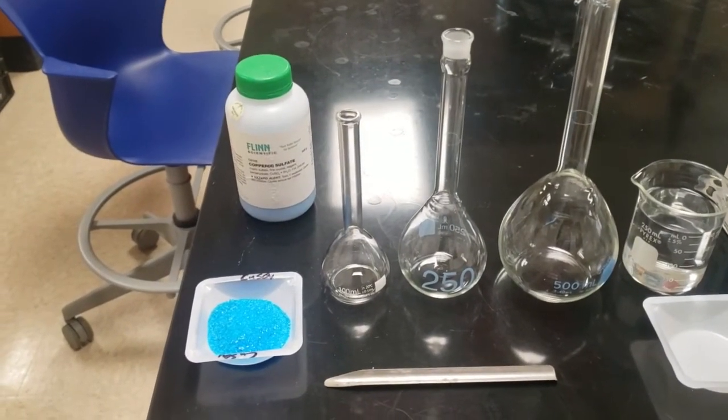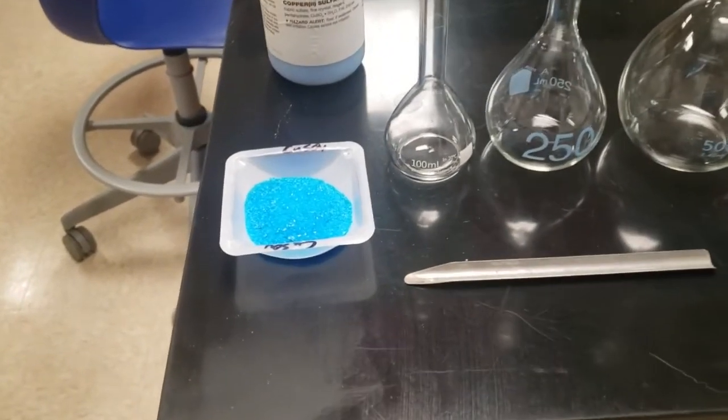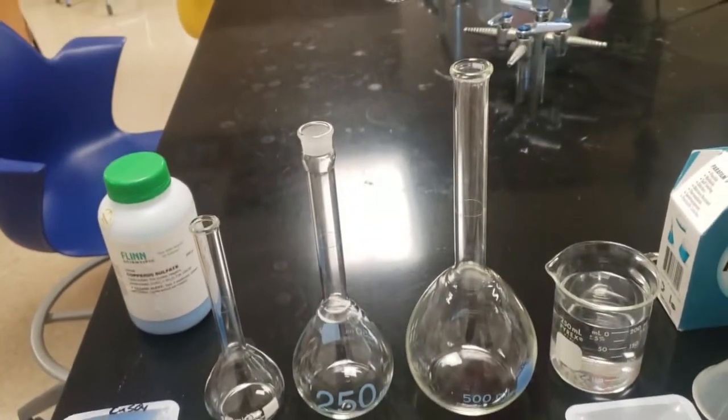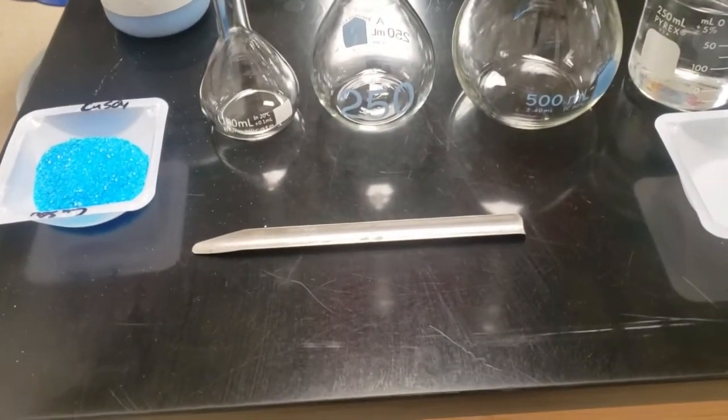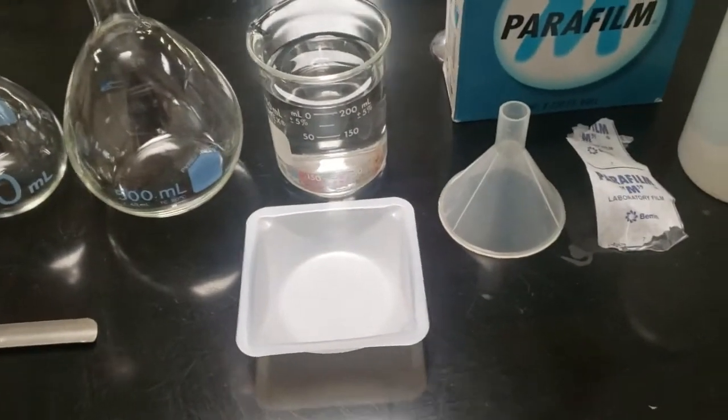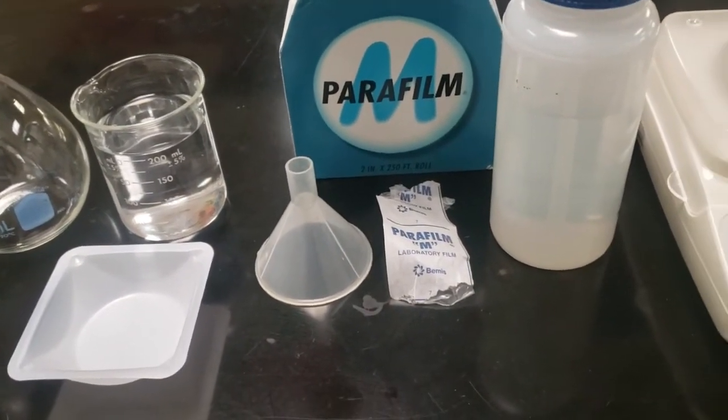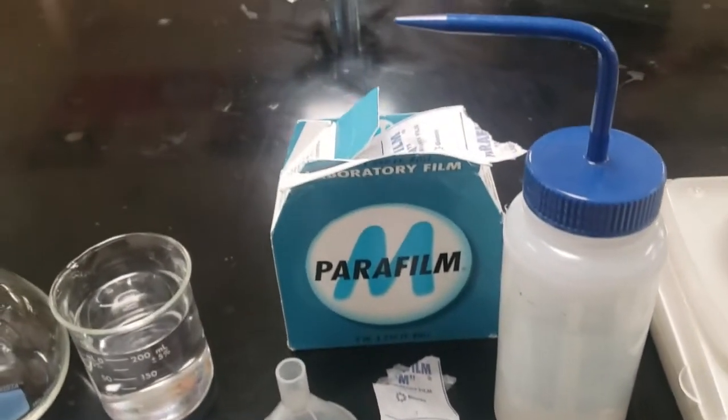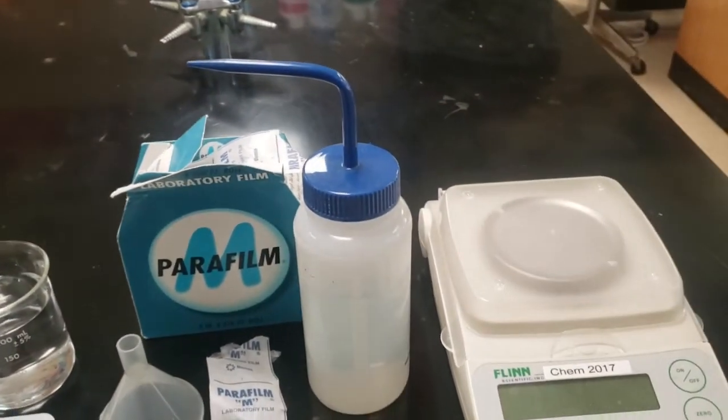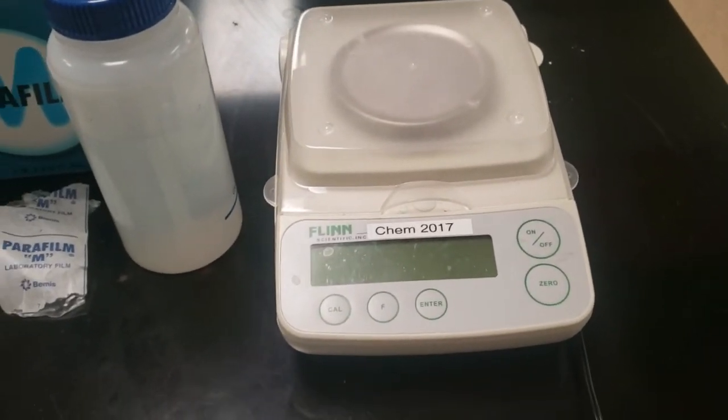Here we have our tools for this lab. We have the actual chemical in a weighing boat. We have three different volumetric flasks. You'll use one of them. You'll be assigned. Here's a scoopula. It's great for digging things out and scooping things up. Here's an empty weighing boat, 250 milliliter beaker of distilled water, a powder funnel that has a big hole in it, a piece of parafilm - you need to take the paper off for it to work - and the blue top is distilled water you can squirt with. Lastly, we have an electronic balance.